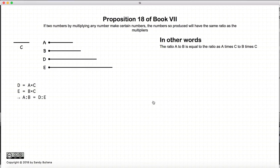In this proposition, we have two numbers, D and E, that are created by taking another two numbers, A and B, and multiplying them by the number C. This proposition states that the ratio of A to B is equal to the ratio of D to E.